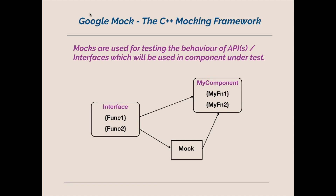As far as fakes are concerned, from a distance a fake looks like a real implementation, but it isn't a real implementation. Stubs are something also used alongside mocks that can provide a pre-canned output to a function call. That's all about mocks — let's go into the code.